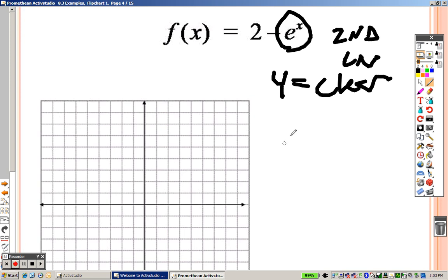So second ln, and when you do that, this is what it should look like on your calculator. A little parenthesis pops up there. You put the x right there on the inside, and then end the parenthesis, and go to graph. And now my graph kind of looks like this.